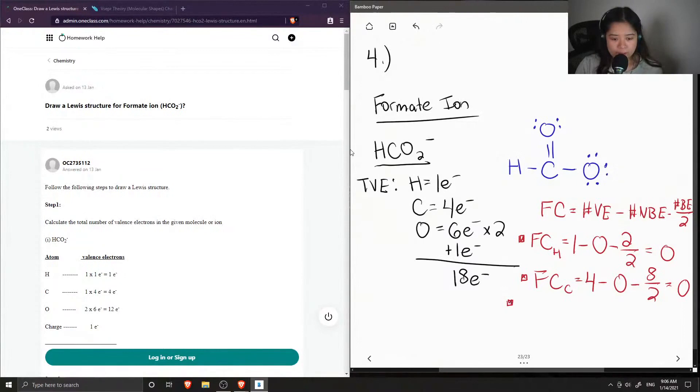And now let's do the formal charge of our oxygen that has the double bond. Oxygen has six valence electrons. For the double bonded oxygen, there are four non-bonding electrons. And then lastly, there are two bonds from the oxygen. So we have four bonding electrons divided by two. So six minus four minus two is just zero.